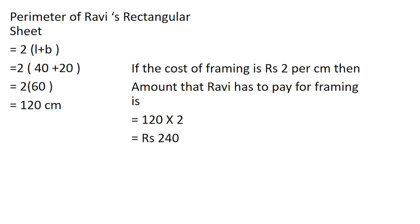Perimeter of Ravi's rectangular sheet is equal to 2 into (length + breadth), which is 2 into (40 + 20), which is 2 into 60, giving us 120 centimeters. If the cost of framing is rupees 2 per centimeter, then the amount Ravi has to pay for framing is 120 into 2, which is equal to rupees 240.